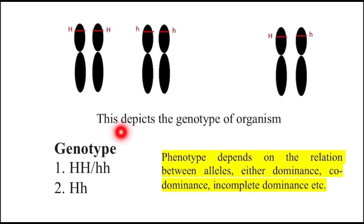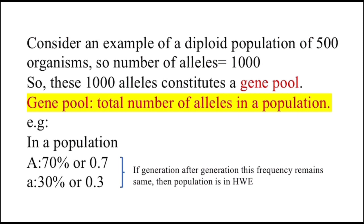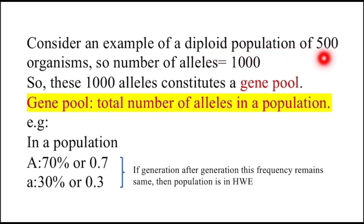This depicts the genotype of the organism. On the basis of genotype, the organism can be homozygote or heterozygote, whereas phenotype depends on the relation between alleles — either dominance, co-dominance, or incomplete dominance. Consider an example of a diploid population of 500 organisms. A diploid organism has a minimum of two copies of an allele, so a population of 500 organisms should have 1000 alleles. These 1000 alleles constitute a gene pool.